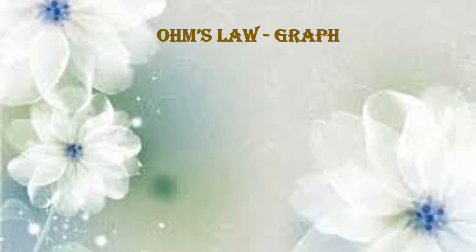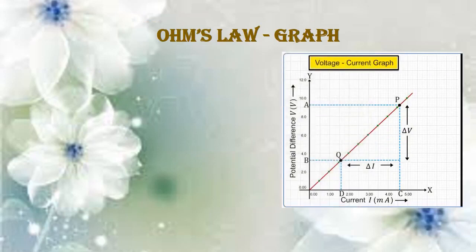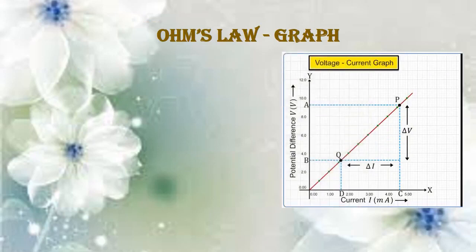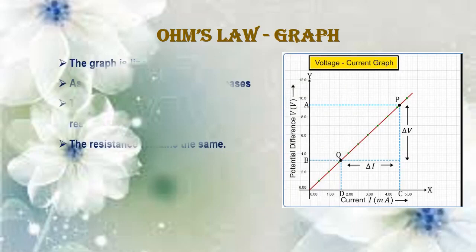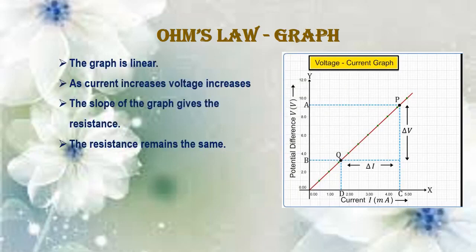Now let us draw a graph. We have seen that as the potential difference increases, the current also increases. When we plot a graph between potential difference and current and mark the points, we get a straight line — so it is a linear graph. From the graph we can observe: first, the graph is linear; second, as current increases voltage also increases; and third, the slope of the graph gives the resistance.